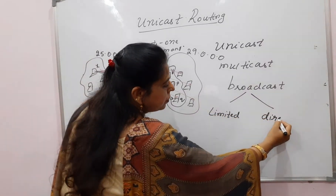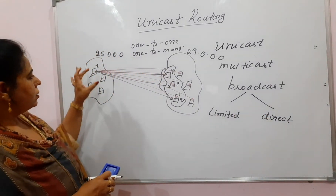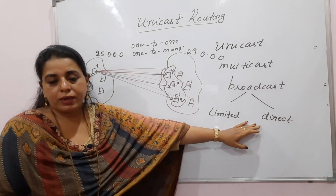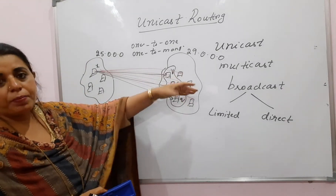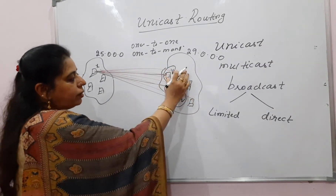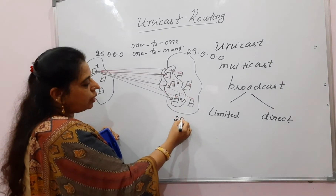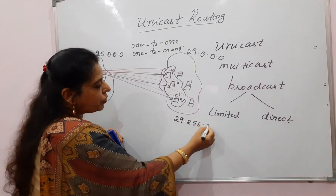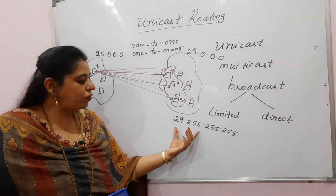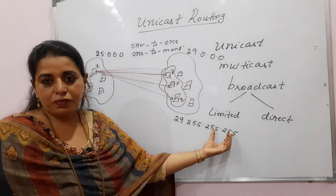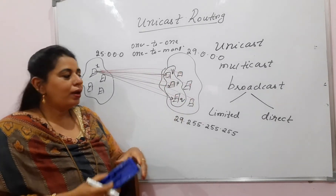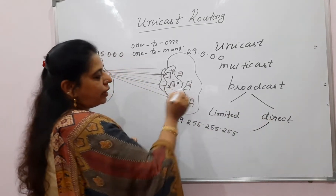What is the difference between limited and direct broadcast? The one shown here in red is called direct broadcast — it communicates with all nodes present in the other network. If the other network is 29.0.0.0 and it wants to send a packet to all nodes there, it uses the destination address 29.255.255.255. With this, all nodes in that network receive the packet. This is one-to-all — the direct broadcast.